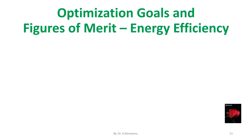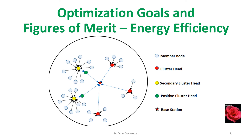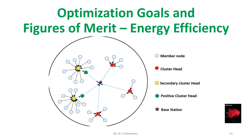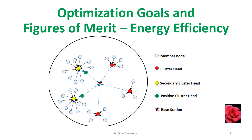Let us see a simple scenario. In this diagram, the sensor node — the member node — is available far away from the base station. In order to conserve the energy available in the sensor, the information collected by the sensor nodes is sent to the cluster head. From the cluster head, the information is sent to a secondary cluster head, and from there to a higher cluster head, which alone sends the information to the base station. In this way, energy efficiency is managed.